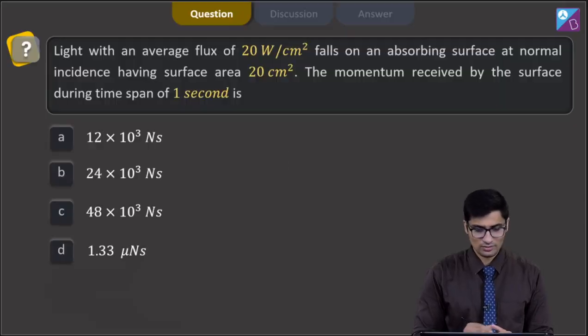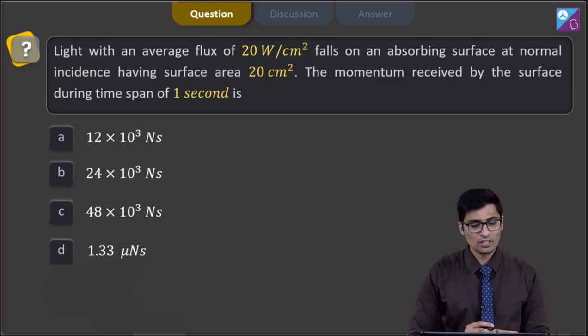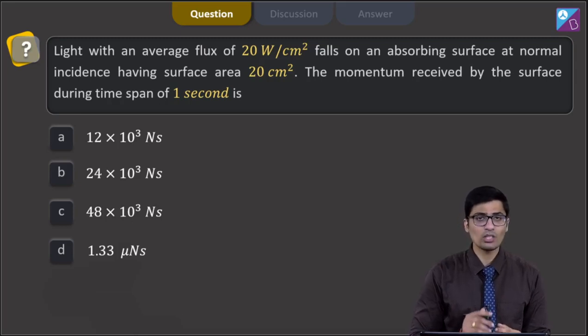This is question 31. In this question, light with an average flux of 20 watt per centimeter square falls on an absorbing surface at normal incidence having surface area 20 centimeter square. The momentum received by the surface during a time span of 1 second is,